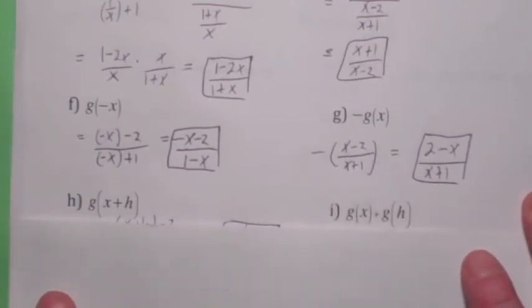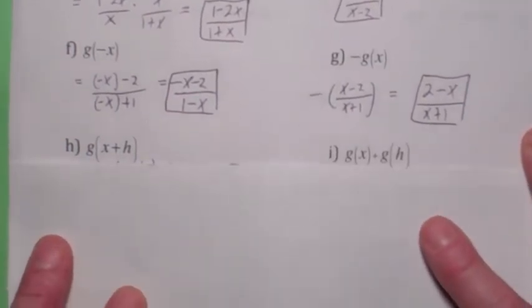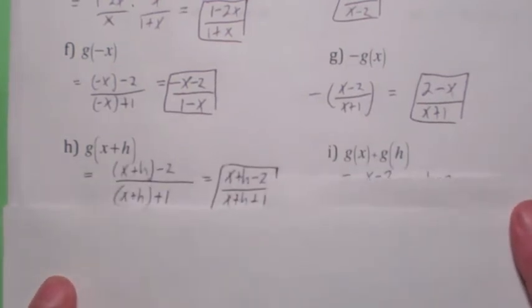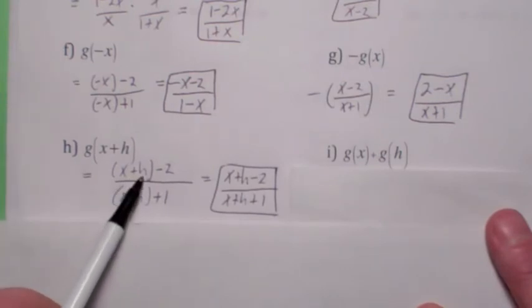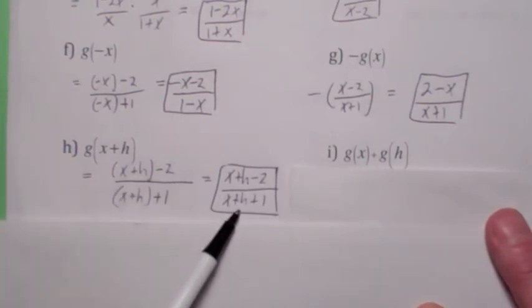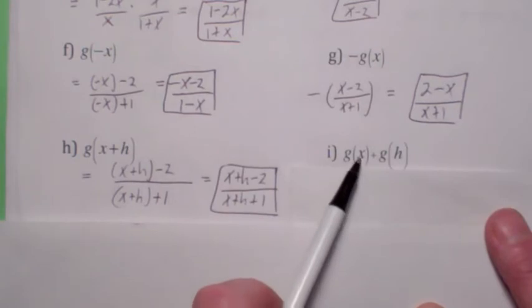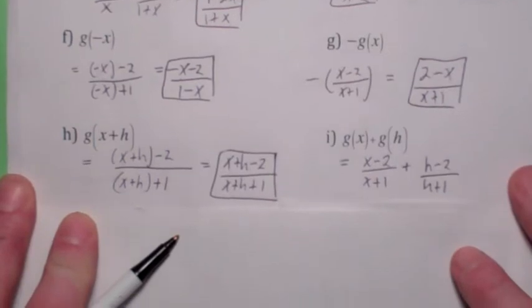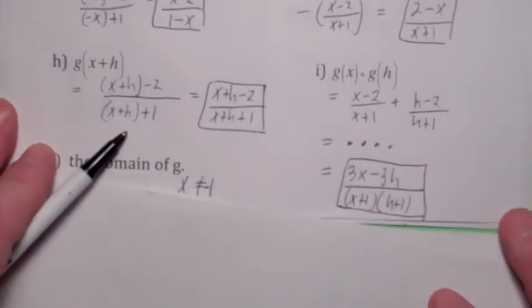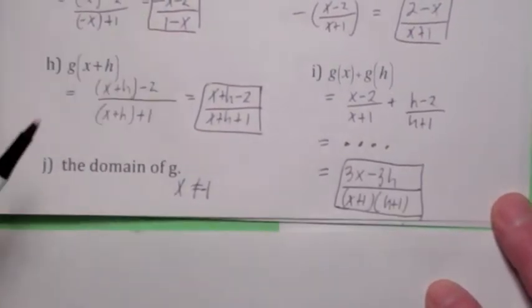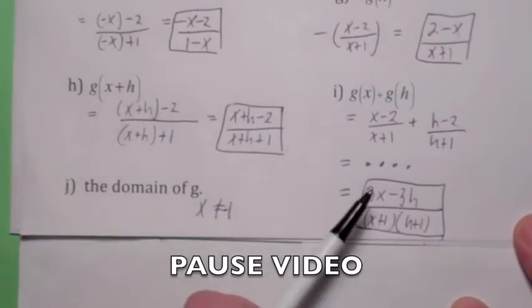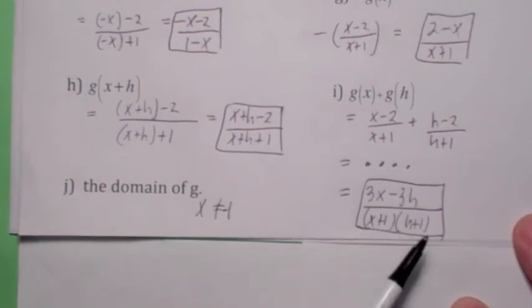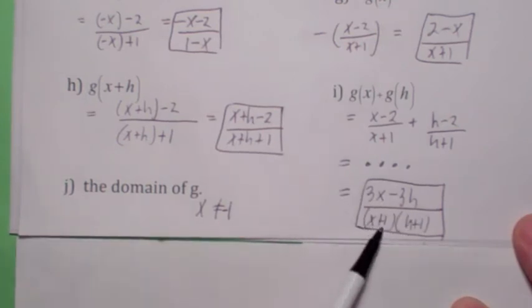Let's look at the difference between these two. Here you're plugging in x plus h into the original function. Everywhere there's an x, you're plugging in x plus h. So this one becomes x plus h minus 2 over x plus h plus 1. There's not much you can do to that. This one, you have to literally find g of x and then add them together. So that's what g of x plus g of h is. Now I'm leaving a lot of steps out of here. I'll let you fill in the steps. Maybe hit the pause button and see if you can show that when you add these two together, you should get 3x minus 3h over x plus 1 times h plus 1.